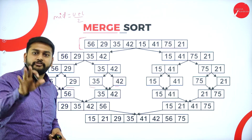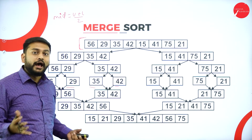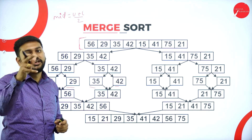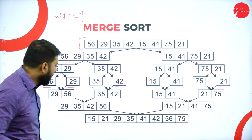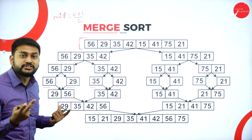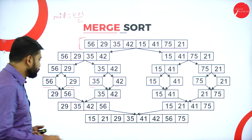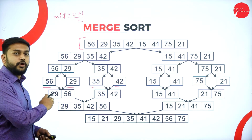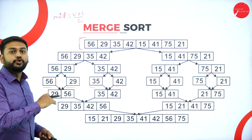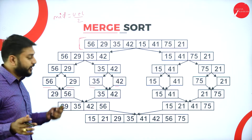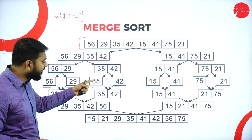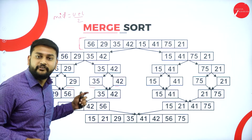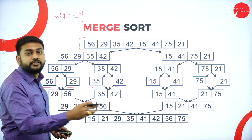You have divided the array — so what's next? Now I need to merge into a sorted array. When I'm merging, I will compare two elements: whichever is lesser I will place on the left side, and whichever is greater I will place on the right side. For example, 35 is lesser than 42, so I place 35 on the left and 42 on the right. That is how the merging works.